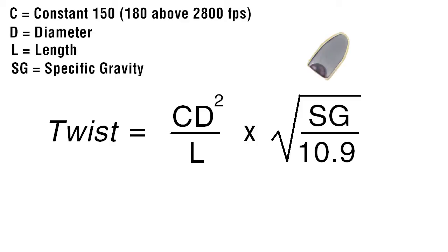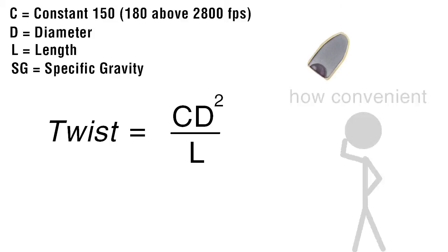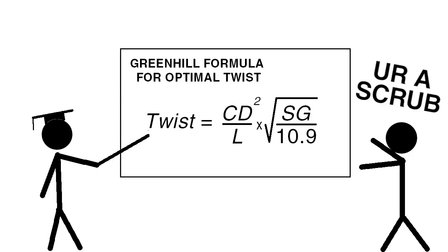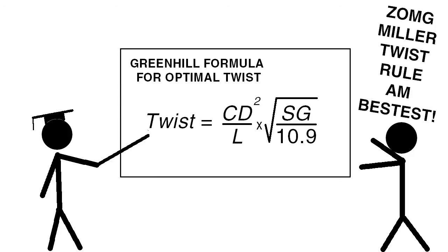For example, lead core bullets will have a specific gravity value of 10.9 which would cancel the second half of the equation. Some people denounce the Greenhill formula for its disregard of bullet shape or weight and prefer the newer Miller twist rule. However, the Greenhill formula is still used by many today.